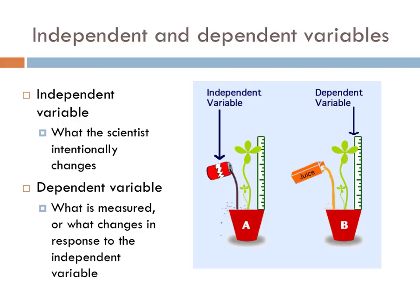The graphic to the right provides an example of an independent and dependent variable. A scientist might want to change the liquid food that a plant gets and measure how that affects the height of a plant. The independent variable — that which is intentionally changed — is the type of liquid used. The dependent variable — what is being measured — is the height of the plant after a set amount of time.